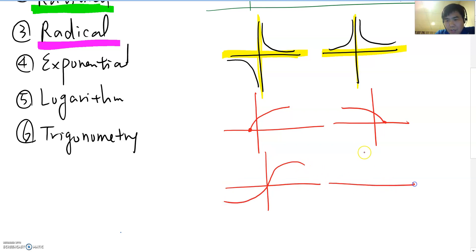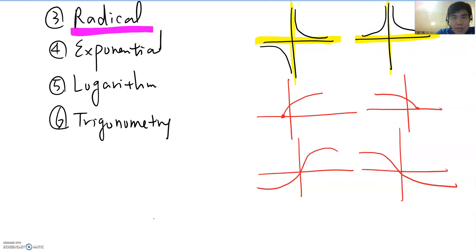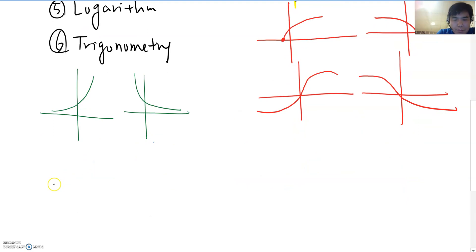And the exponential means we have the graph shapes this or this. And the logarithm we have the graph looks like this or this.